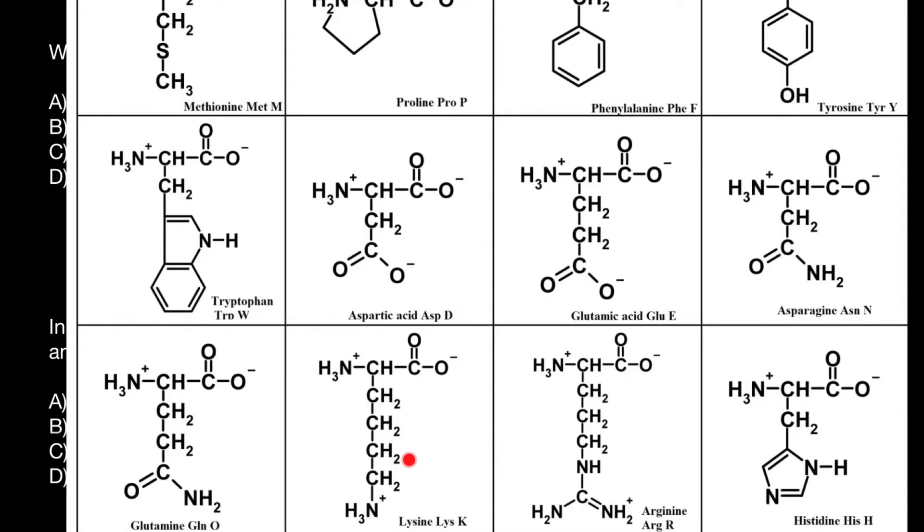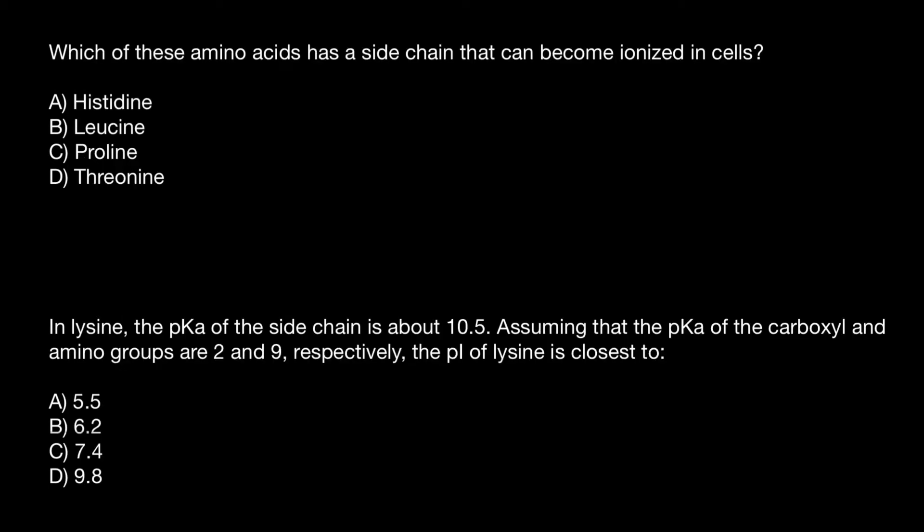As you see in the side chain R group, they have a positive charge. You just have to memorize them. So two are acidic amino acids and three are basic. At physiological pH, histidine will be ionized, making it the only correct answer out of these four amino acids. Next question.